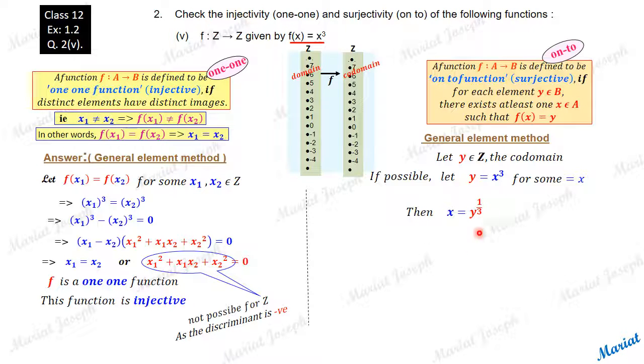Then x must be y to the power 1/3 from this equation. If y can be written as x cube, x must be y raised to the power 1/3. Now according to the definition, for a y that we have taken from the co-domain, we did calculate an x. One x is calculated,